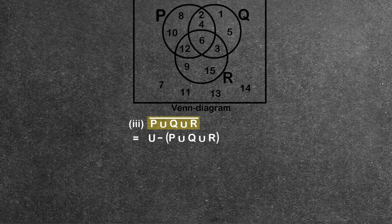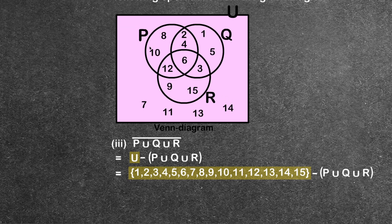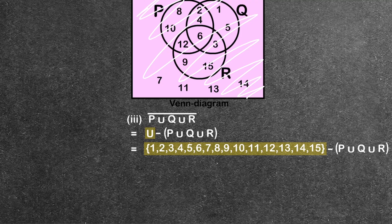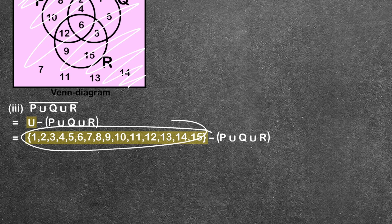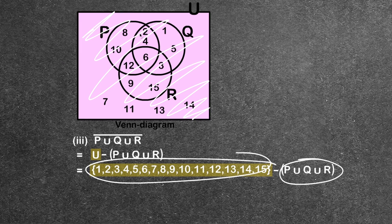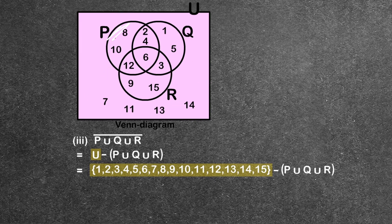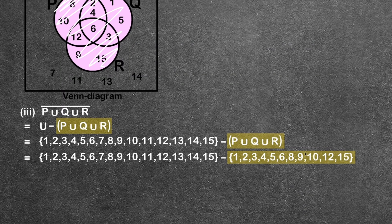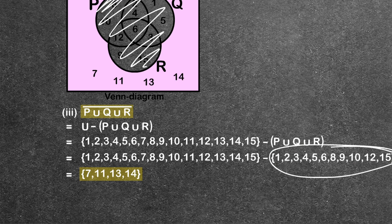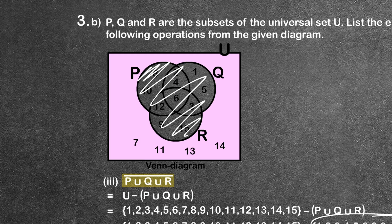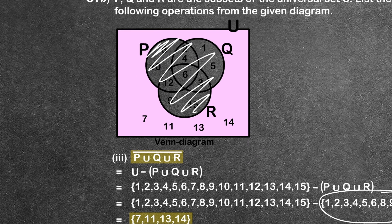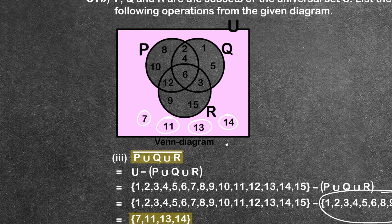Now the complement of U — P union Q union R. The universe contains all elements. For U minus P union Q union R, the remaining elements are 7, 11, 13, and 14.